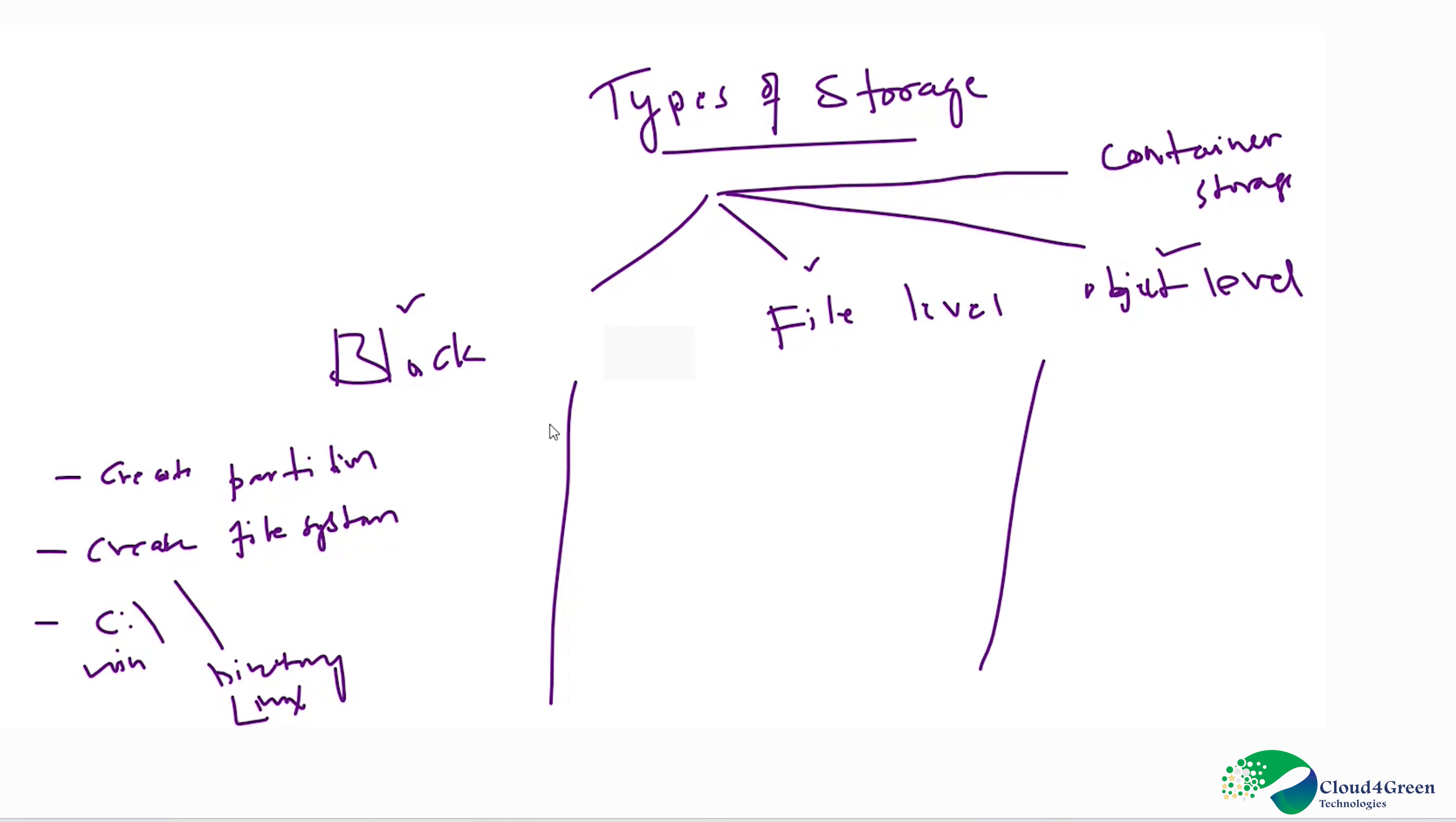Next one is file level. File level is nothing but where there is already a partition and a file system where you will create a share and access remotely. Access over network.